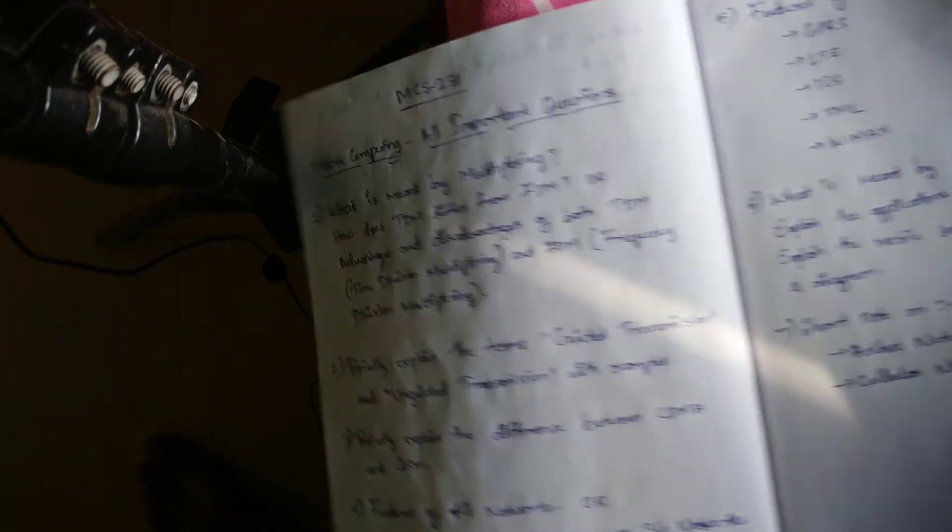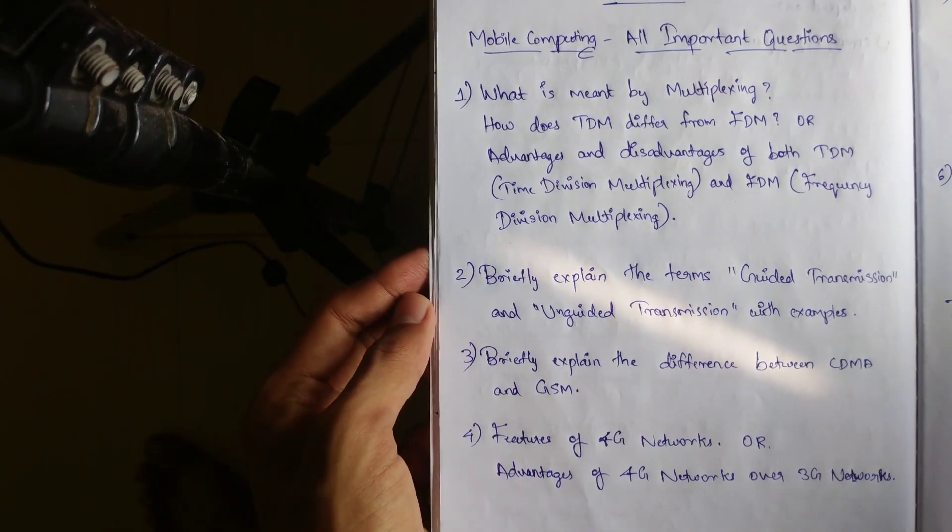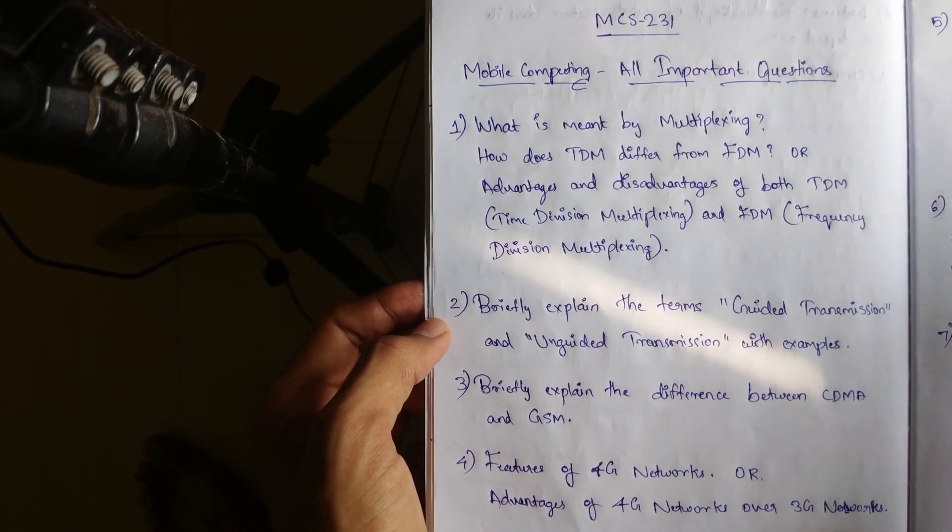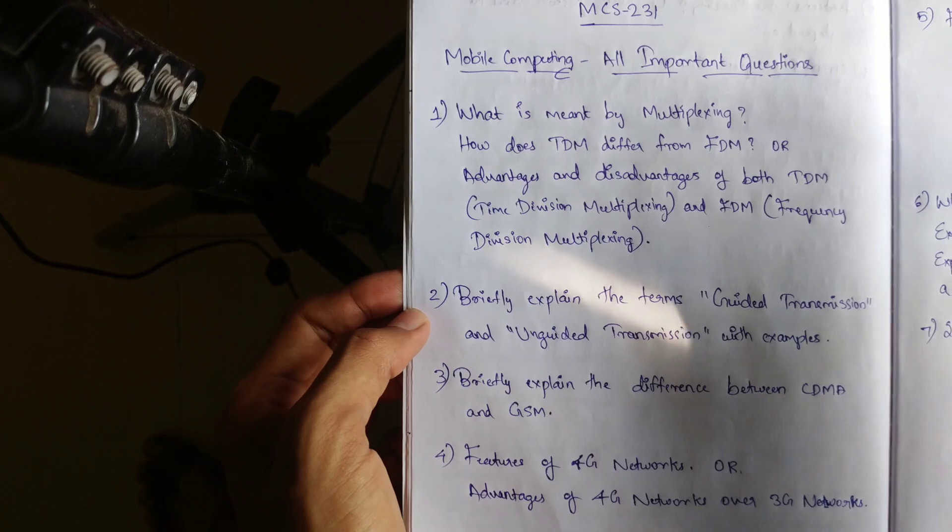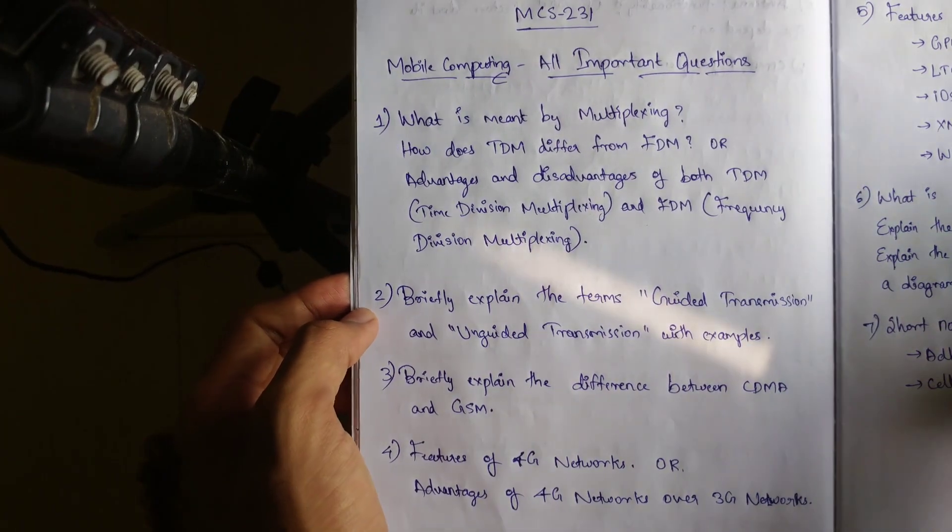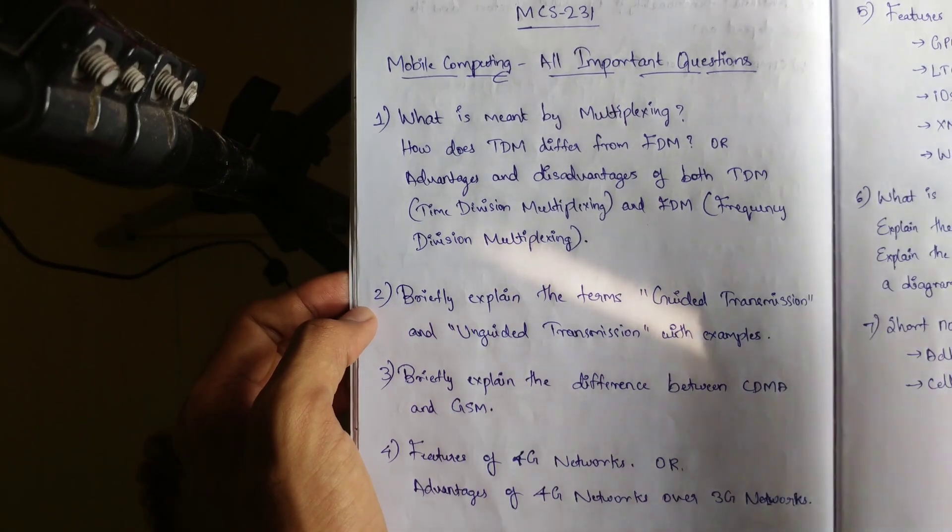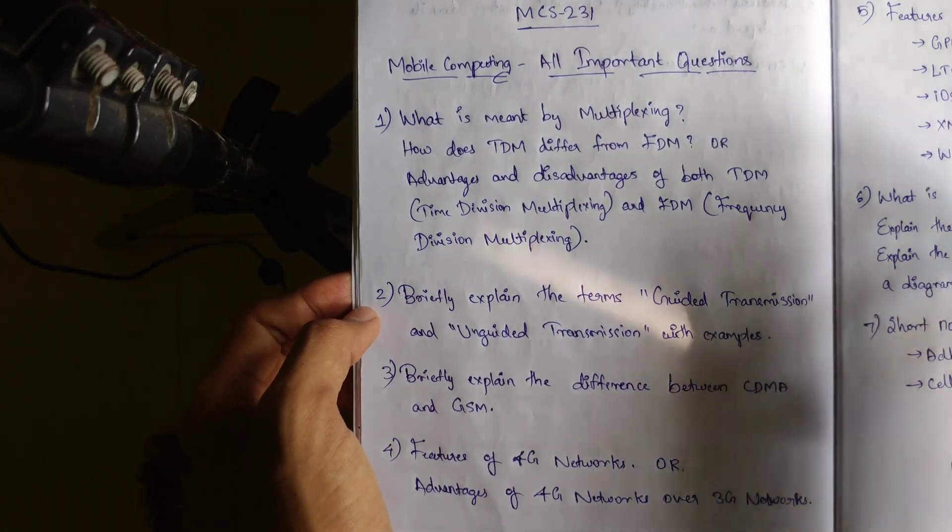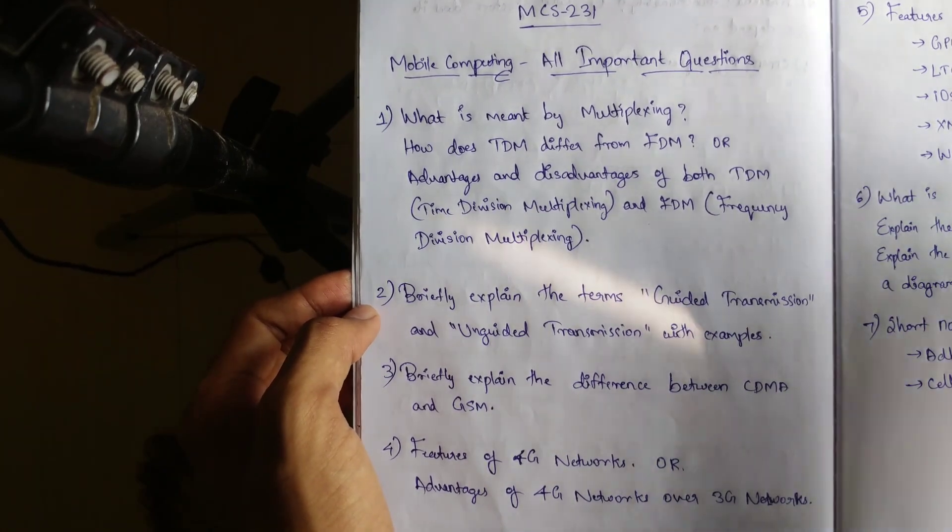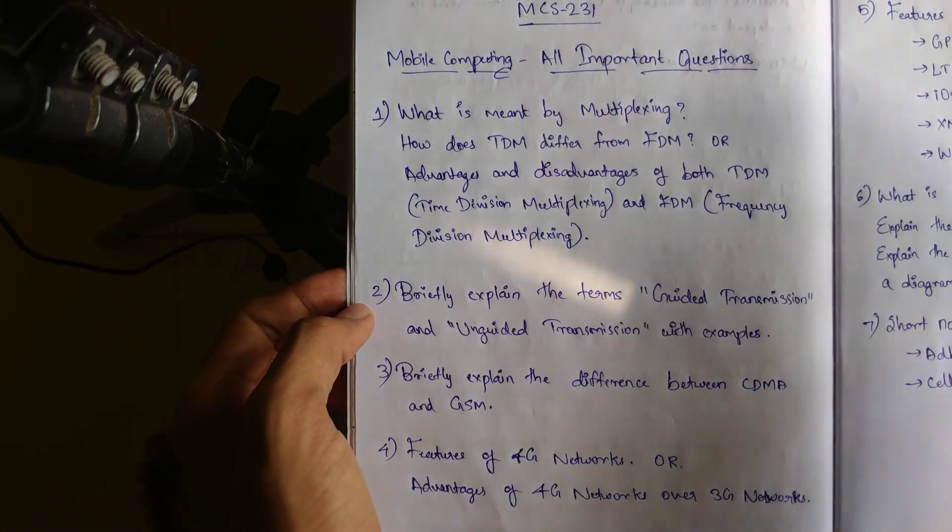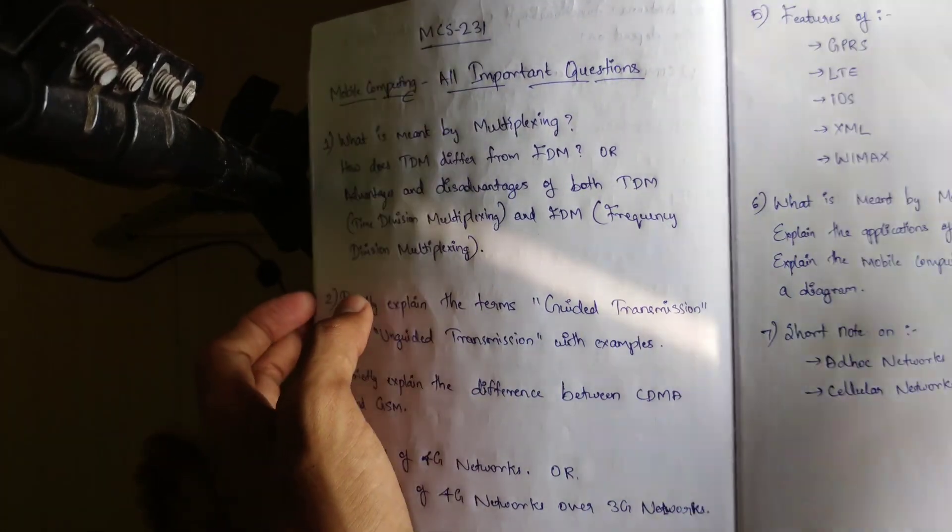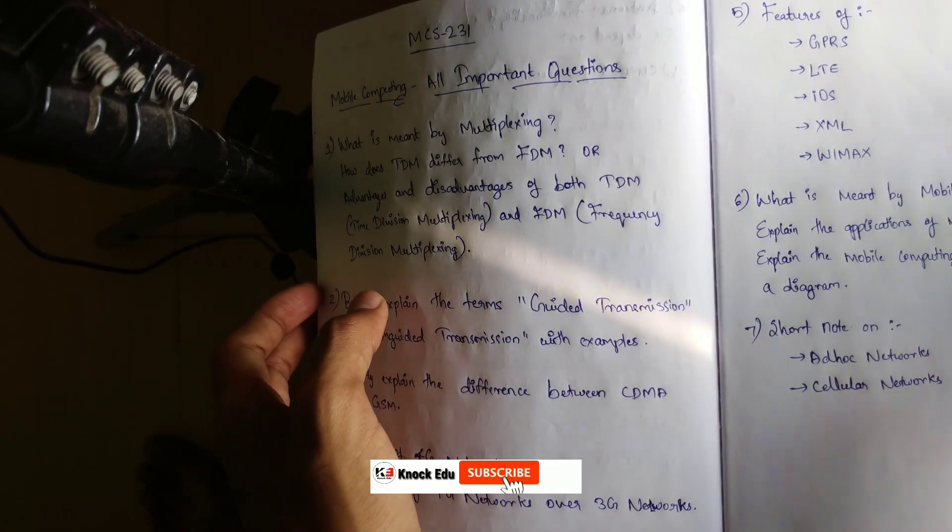So guys, these are the 7 important questions that we have covered in MCS 231 mobile computing. We can expect many like 80% of questions from these that we have discussed. So along with this video, I will be posting the model question like the previous year question papers in the video description. So you can find in the description itself, download it and refer while you are preparing for your examination. Please cover these topics. It will be so useful to you while you are attending the examination.